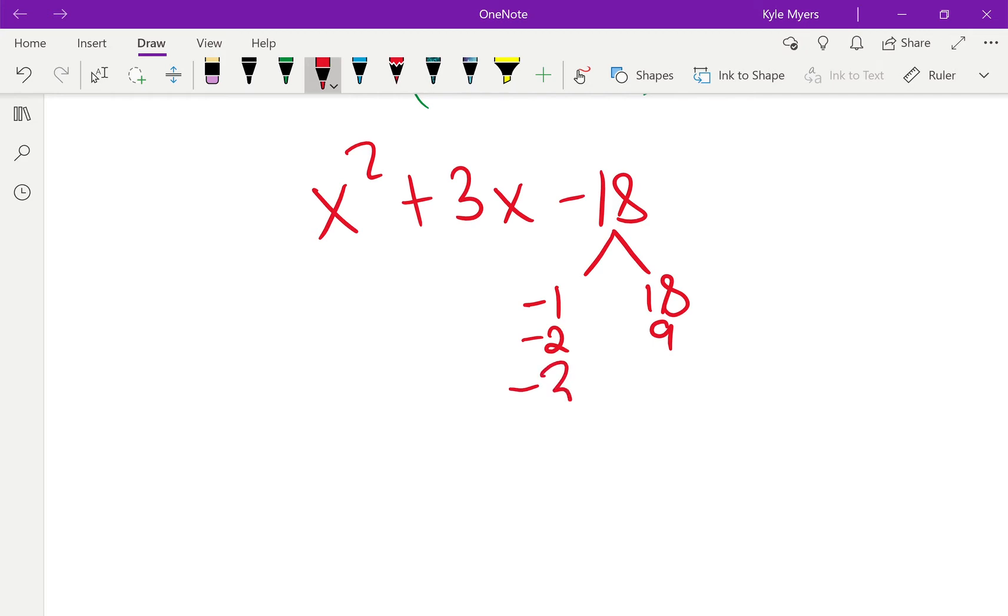3 and 6. Yeah, that works. Negative 3 plus 6. This is a plus. Negative 3 plus 6 is positive 3. And then, of course, when I multiply, I get negative 18. So there we go. There's your x. Put an x there, and you're done.